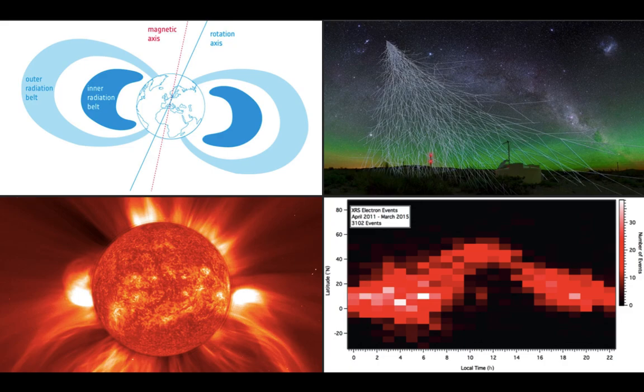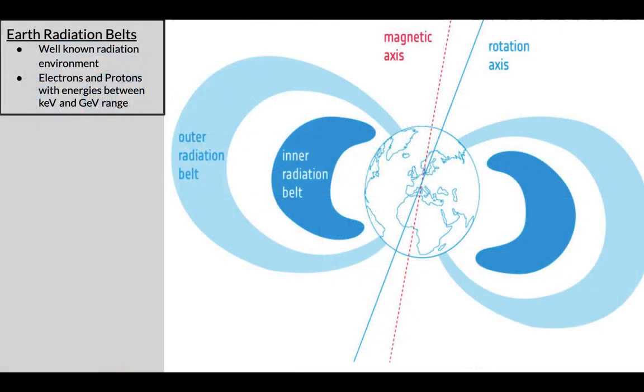This mission will encounter four main types of radiation. The Earth radiation belts, a very well known environment composed of electrons and protons around the Earth. Knowing so much about these environments allows to use it to characterize and calibrate the detectors aboard. This is an important step of the mission to ensure that every analysis is correctly performed later on.